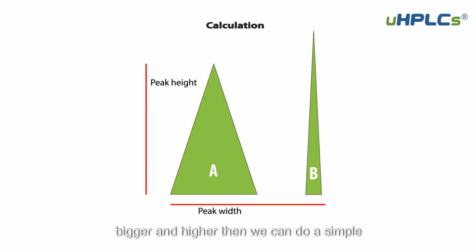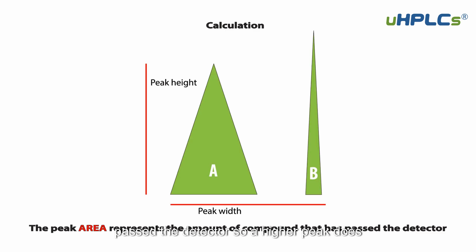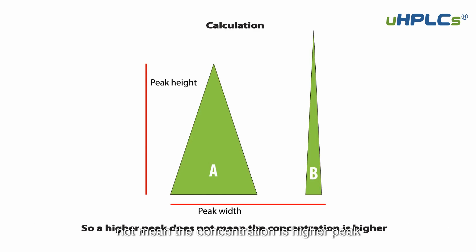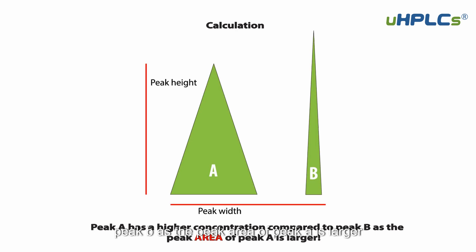We can do a simple calculation as shown in the diagram. The peak area represents the amount of compound that has passed the detector. So a higher peak does not necessarily mean a higher concentration — peak A has a higher concentration compared to peak B because the peak area of peak A is larger.